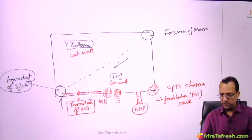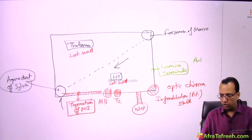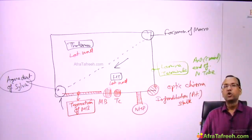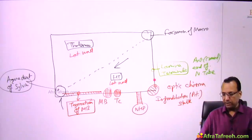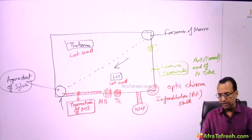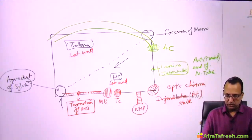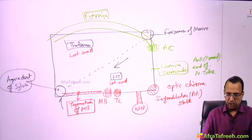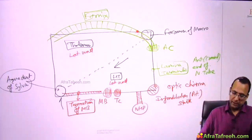The anterior boundary of the third ventricle is the lamina terminalis. Lamina terminalis is actually the anterior — or cranial — end of the neural tube. The neural tube stops here, forming the lamina terminalis, which forms the anterior boundary of the third ventricle along with the anterior commissure. The fornix also begins anteriorly but is primarily the roof of the third ventricle.